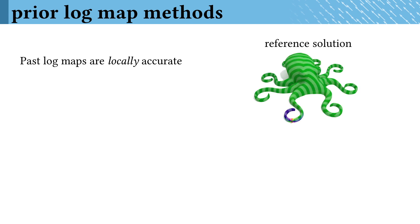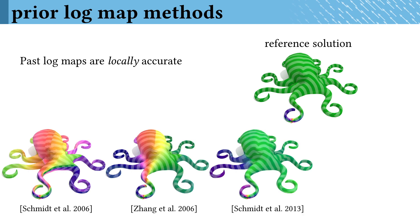On triangle meshes, a few different methods for computing this logarithmic map have been put forth over the years, but these schemes were designed for decaling, so they were only locally accurate. You can see here that the first three schemes on the bottom all have significant errors compared to the reference solution.